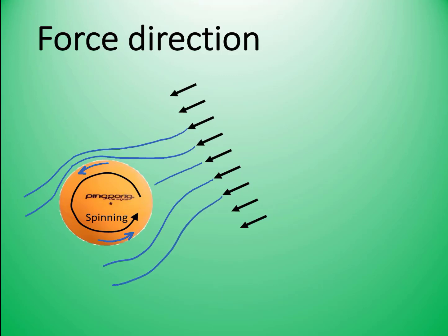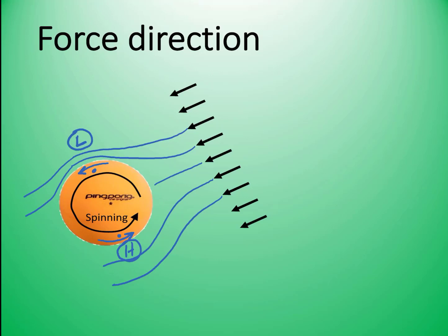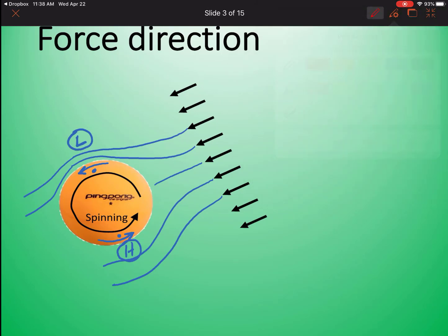Conversely, on the other side, the flow is slowed down because it opposes the direction of the surface. So on one side you have high velocity and on the other side low velocity. According to Bernoulli, where we have high velocity we have low pressure, and where we have low velocity we have high pressure. That pressure asymmetry causes a lift force in the high-to-low pressure direction — shown in red here as a net force on the ball.